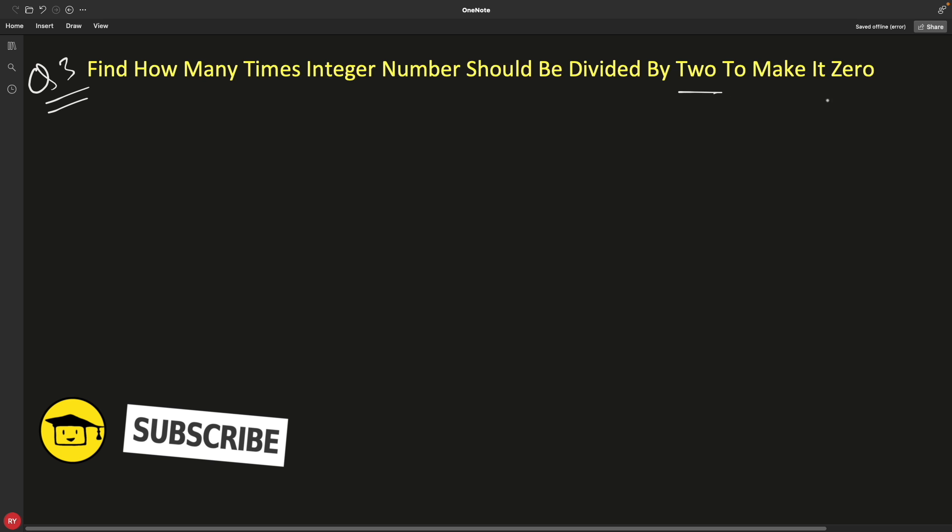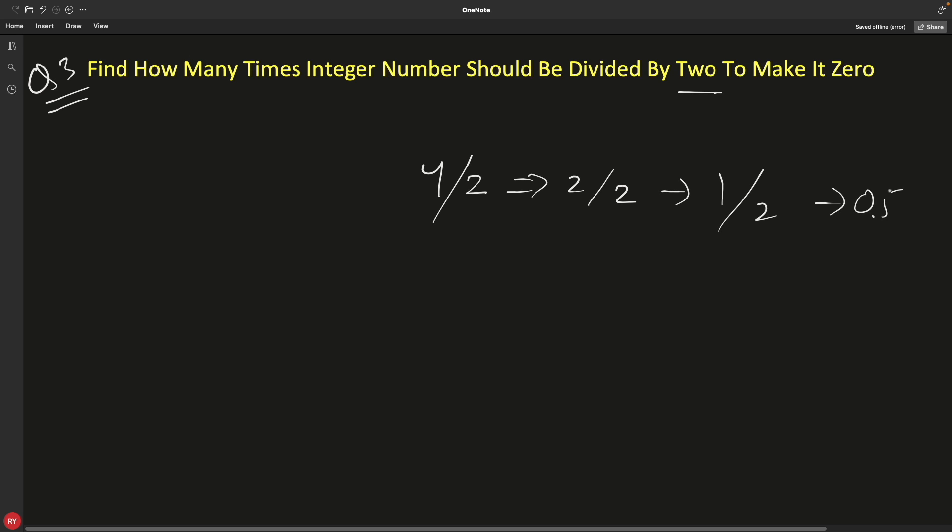Let's suppose we have four here. Divided by two is two, and then divided by two is one, and then divided by two is 0.5, which will be considered as zero. After the decimal point anything will not be considered because we are talking about integer numbers.